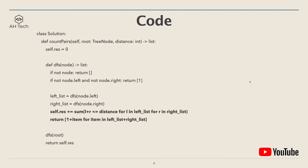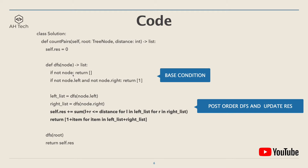Now let's see the code in action. First we define a class variable self.res initialized to zero. Then we define a DFS recursion function. For any recursion function, the first thing is to define the base cases: if the node is null, return an empty list; if we reach a leaf node — which has no left and right children — return a list containing only one.